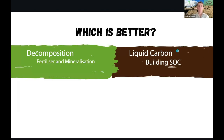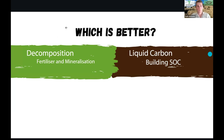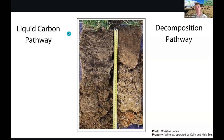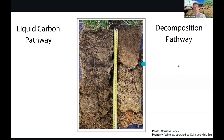So which process is better? It depends on our goals. The decomposition pathway is better as a fertiliser and for mineralisation, while the liquid carbon pathway is better for building soil organic carbon. Looking at Dr. Christine Jones' photo, the left-hand side is produced by the liquid carbon pathway - having plants growing all year round with a pasture cropping technique. The right-hand side shows a decomposition pathway, which builds soil organic carbon in the top 10 centimetres but really doesn't do much in the bottom parts of the soil profile. For building soil organic carbon at depth, the liquid carbon pathway is definitely what we're interested in.